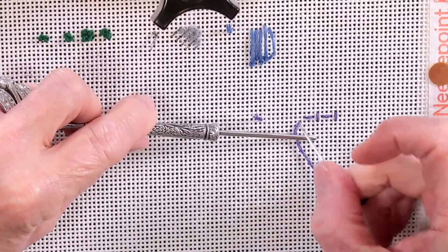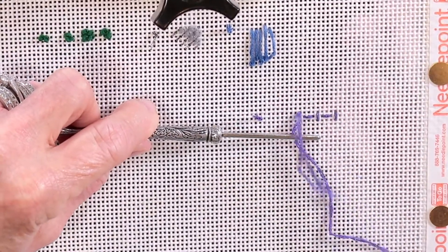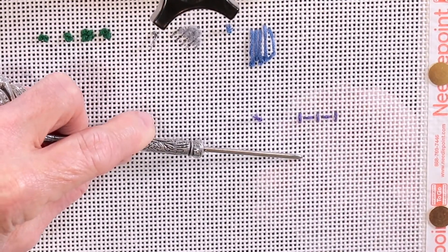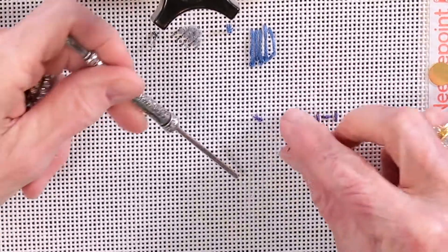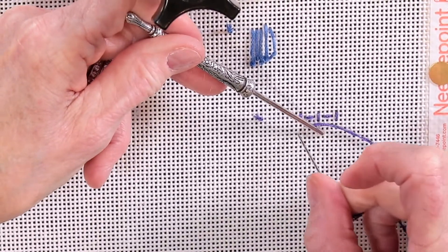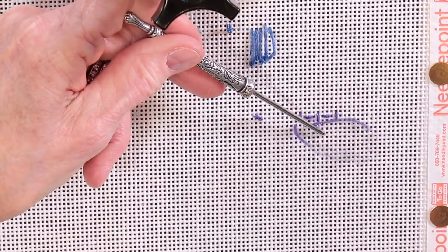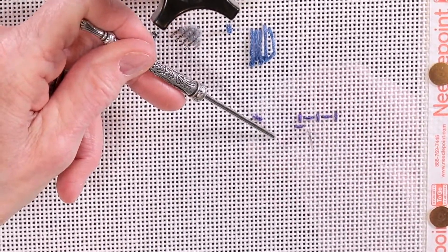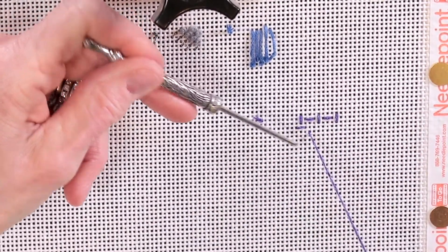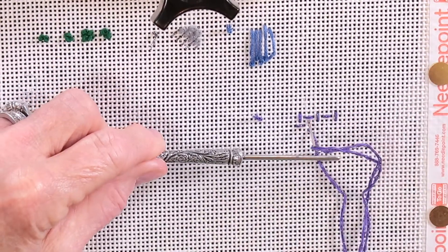Now this can be worked diagonally if you're so inclined, but a lot of people prefer to work it back and forth. For beginners I would suggest doing it back and forth. It's a little bit easier, but basically where you had your vertical row, directly below it you're doing a horizontal.